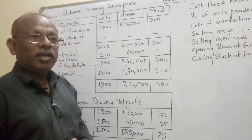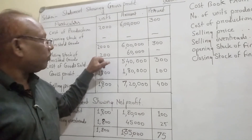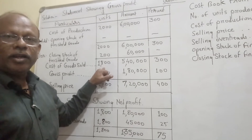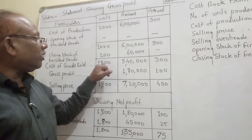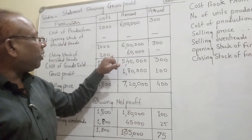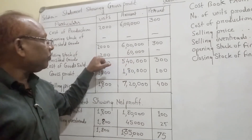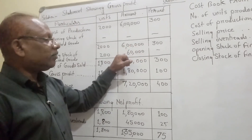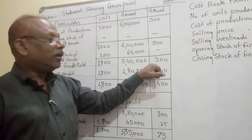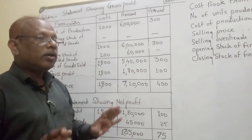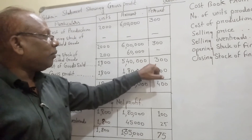Cost of goods sold is also called COGS. Deducting 200 units (closing stock) from 2000 units produced, we get 1800 units as cost of goods sold. Multiplying 200 units by 300 rupees gives 60,000 rupees. Deducting 60,000 from 6,00,000, we get 5,40,000 rupees. The cost of goods sold rate per unit is also 300 rupees per unit.